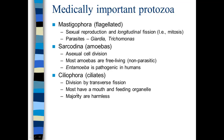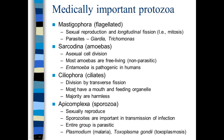Sporozoa or Apicomplexa reproduce sexually, and these are all parasitic and include Plasmodium. Plasmodium is the active agent in malaria, and also Toxoplasma gondii for toxoplasmosis. You may have heard of toxoplasmosis being associated with cat feces, and it's very important to avoid cat feces during pregnancy because a toxoplasmosis infection can hurt the developing fetus.